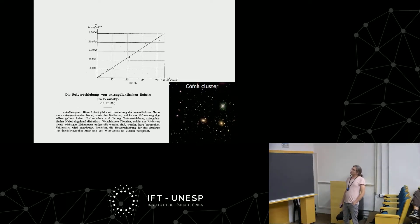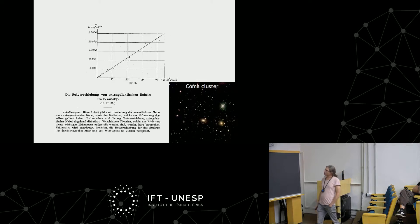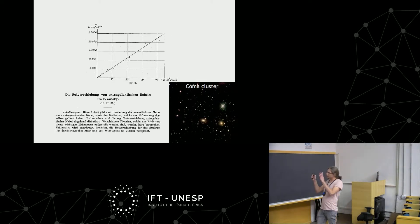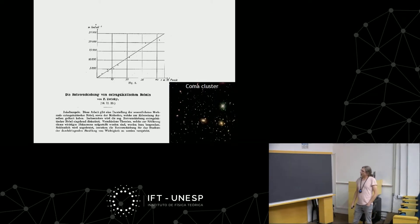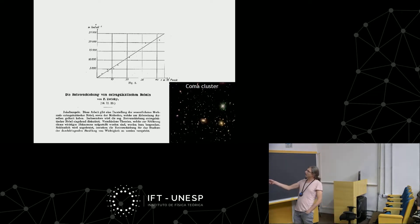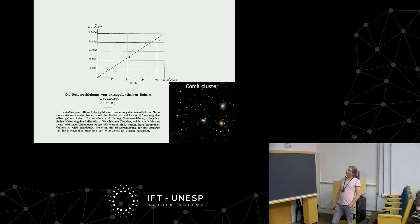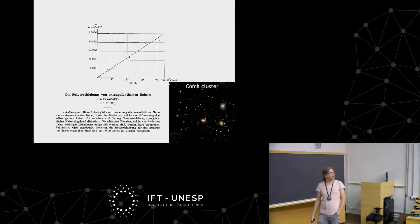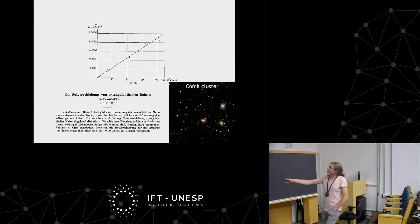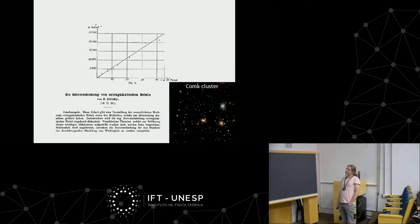What he did was to take observations of the galaxies in the Coma cluster — today we know it is a cluster of galaxies. He took the different nebulae in this system, determined the velocity of these objects from the redshift, and plotted the velocity as a function of the distance of each nebula to the center, obtaining these different data points. At this moment, it was just an observation.